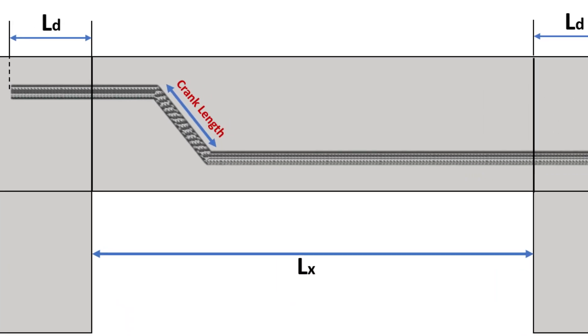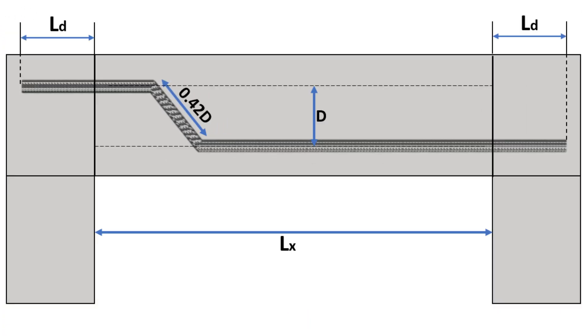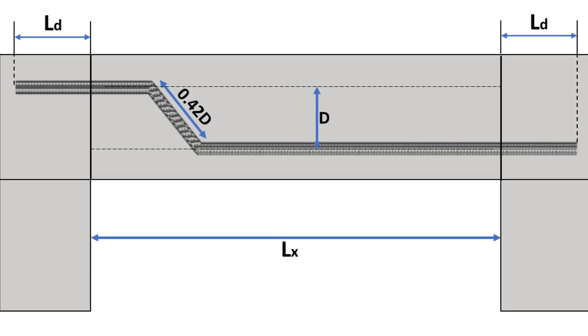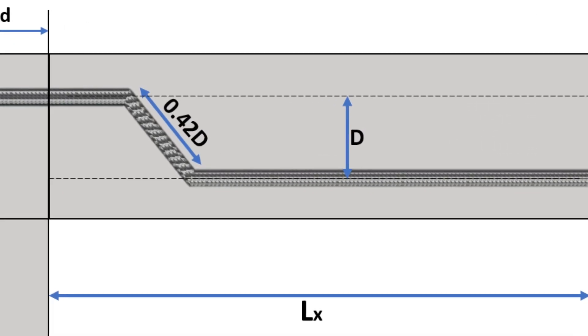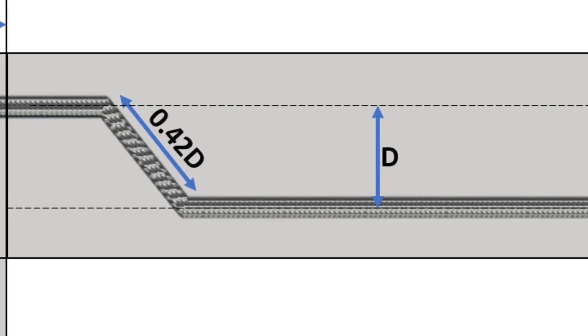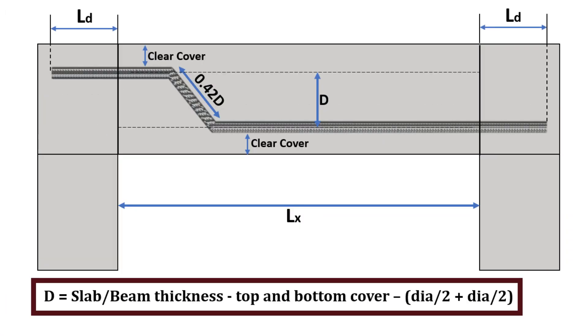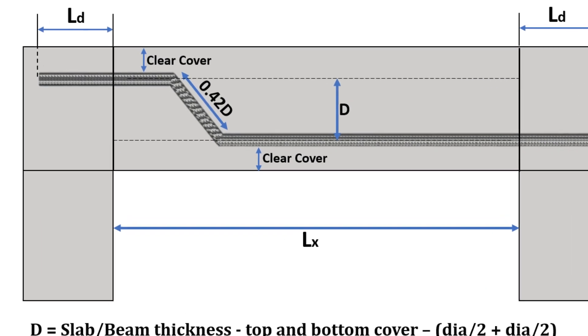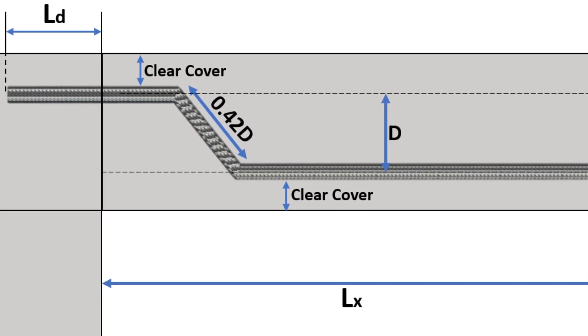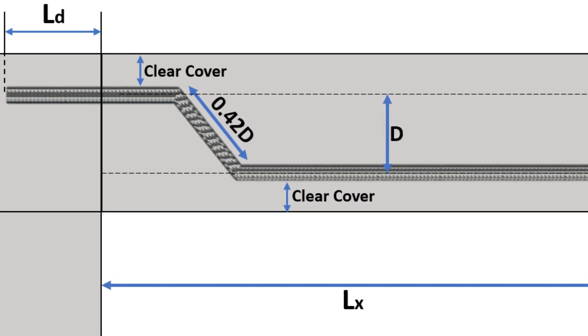The inclined length is also known as crank length and is taken as 0.42D where D is the centre to centre distance between the top and bottom main bars. D can be calculated as the slab or beam thickness minus the top and bottom cover minus the diameter of the bar.